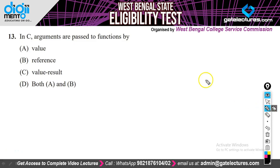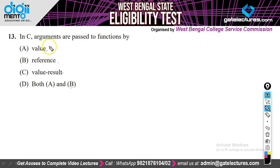The question is: in C, arguments are passed to functions by value, reference, value-result, or both A and B? From the options, we might say both value and reference, because we know in C we have a choice between call by value and call by reference.